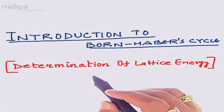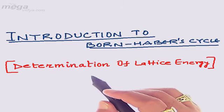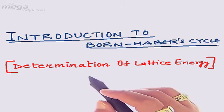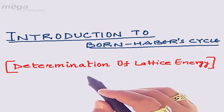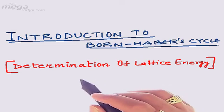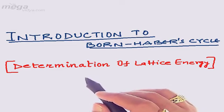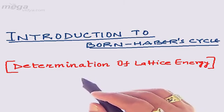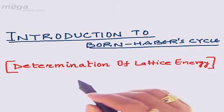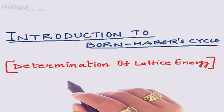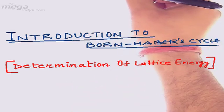In the last section we discussed the mechanism of ionic bonding and its several steps. At the end of that mechanism, we dealt with the term lattice energy. In this section, we shall determine how lattice energy can be calculated during ionic bonding using a particular process called the Born-Haber cycle.